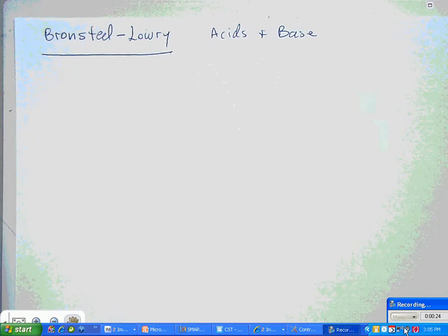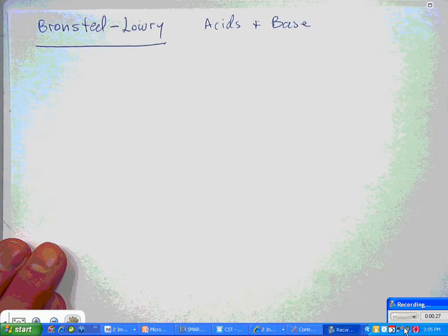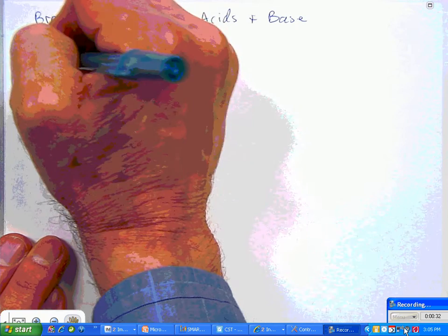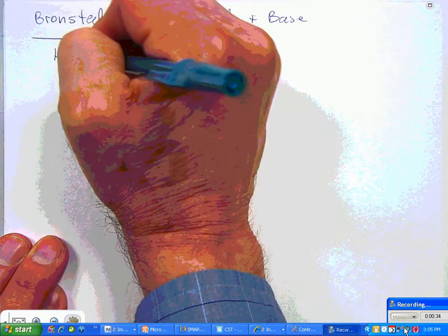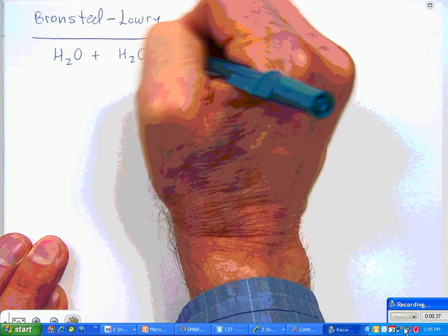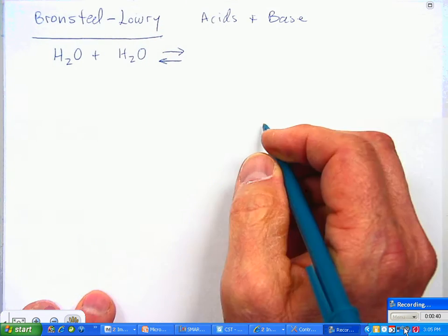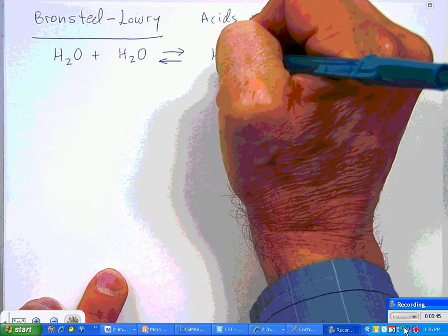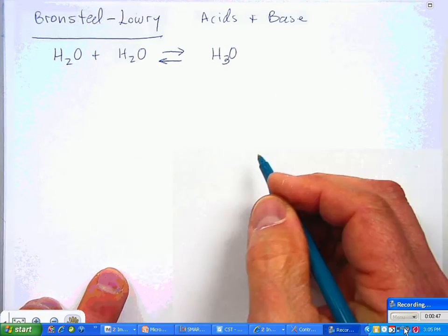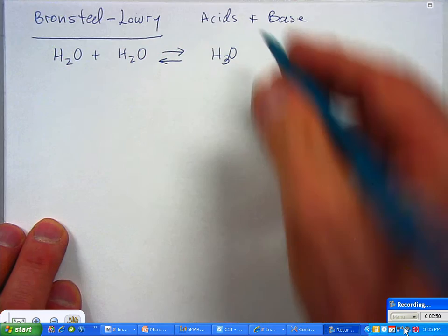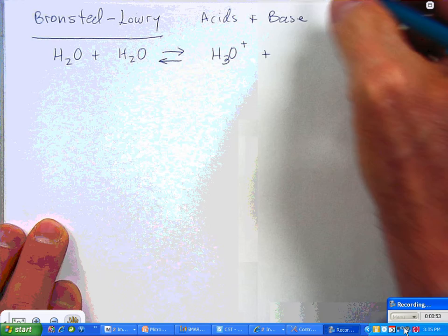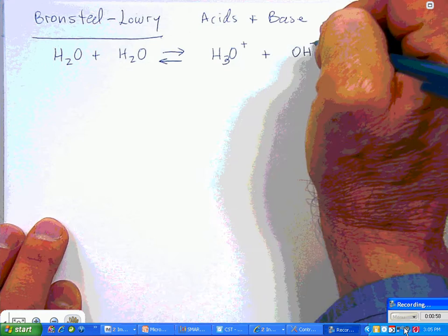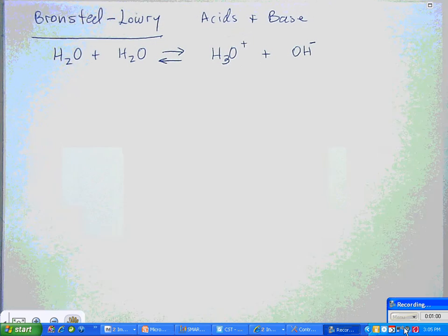The best way I know of to introduce Bronsted-Lowry acid-base concept is to start you out with something that will look exceptionally strange to you. But just get this down. If you need to, come back and watch over and over again until this sits in your mind. We're going to have water doing what they call self-ionization. This isn't actually self-ionization, but it is a transfer back and forth between two water molecules.